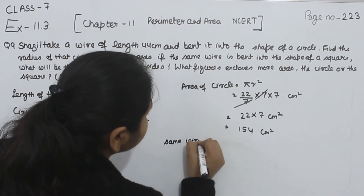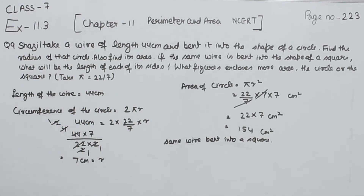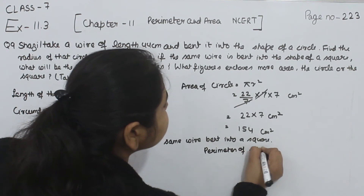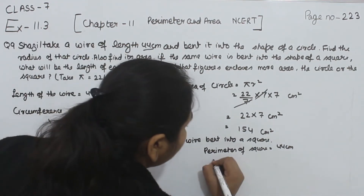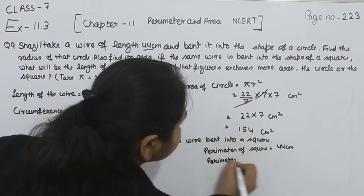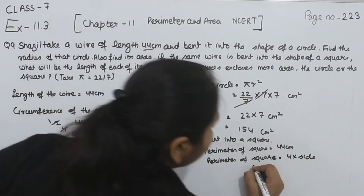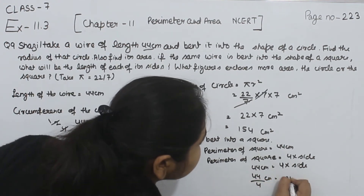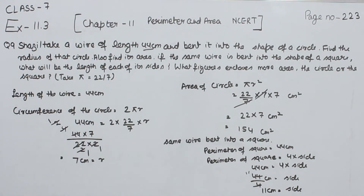Same wire bent into a square. So the perimeter of the square will be equal to 44 cm, because the length of the wire is 44 cm. Now the perimeter of a square is equal to 4 multiplied by side. So 44 cm equals 4 multiplied by side. Transposing, side equals 44 divided by 4, which gives us 11 cm as the side of the square.